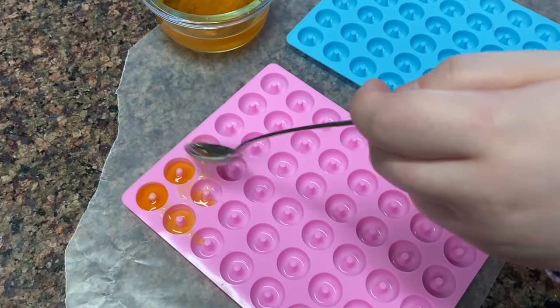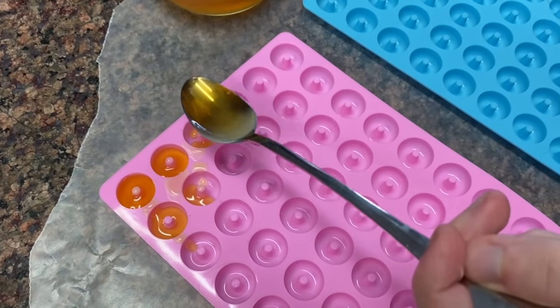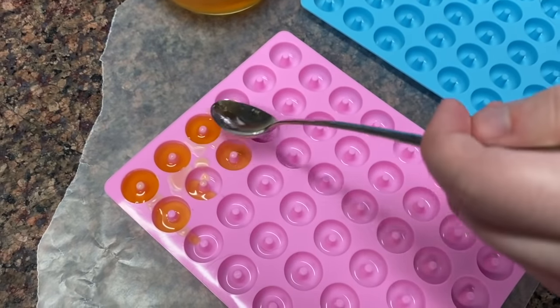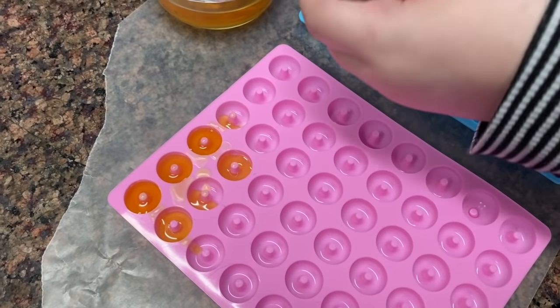For the colored wax, the easiest way I found to do this was to use a spoon and just spoon it directly into the molds.